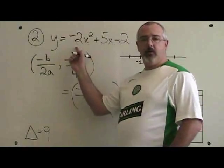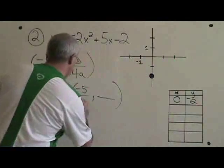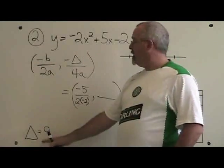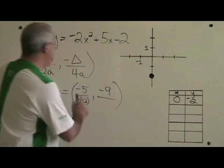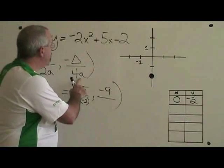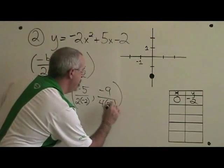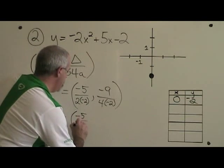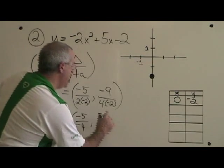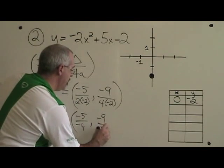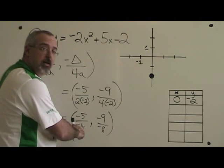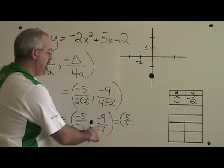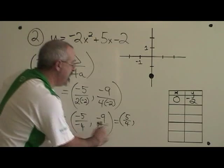2a means 2 times negative 2. Our delta is 9, so negative delta is negative 9. And 4a means 4 times negative 2. 2 times negative 2 is negative 4, and 4 times negative 2 is negative 8. The negative signs top and bottom cancel, so our x coordinate is 5 fourths. And they cancel here as well, so our y coordinate is 9 eighths.